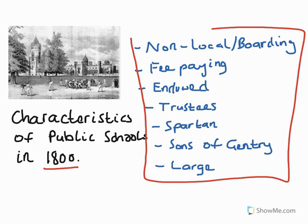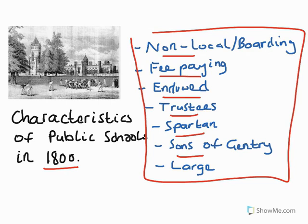Do not forget that you might need to explain the influence on sport. Just to go through those once again: non-local or boarding meant that the boys had lots of time on their hands to play sport; fee-paying meant large incomes to develop facilities; endowed exactly the same; trustees appointed — certainly in the period from 1800 onwards — liberalising headmasters who developed sports in their schools; the Spartan feature meant the rough, tough, brutal character was represented in physical, tough, competitive sports; sons of gentry arrived with similar traditions and expectation of playing sport; and the fact they were large meant that it developed team games. I hope this question comes up for you — these are the characteristics of public schools in 1800 relevant to the A2PE OCR exam. This topic is hot for summer 2013.